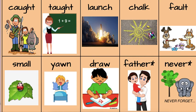So here are the words. Let's read them together: caught, taught, launch, chalk, fault, small, yawn, draw. And then the two sight words have the star. Those do not follow the spelling pattern that we've learned.